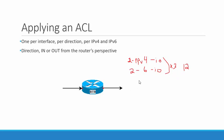When we're trying to decide whether we apply our ACL in or out, we need to look at the flow of our traffic, and it's from the router's perspective. If I'm sitting in the router, is the traffic coming in or is it going out? So it's dependent upon, if I'm sitting in the router, which direction is my traffic going when I decide in and out.